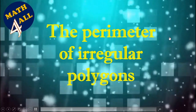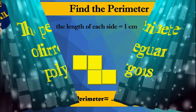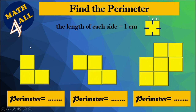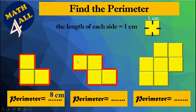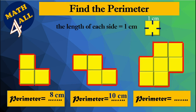Now the perimeter of irregular polygons. Here we have some irregular shapes. The length of each side equals one centimeter, so you have to count the sides to add them. For the first shape: one, two, three, four, five, six, seven, eight — the perimeter is 8 centimeters. For the second shape: one through ten — the perimeter is 10 centimeters. For the third shape: one through twelve — the perimeter is 12 centimeters.